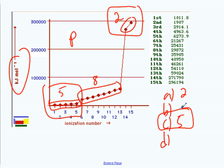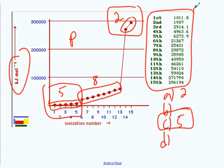Does this seem pretty straightforward? Either graphically or using a table of numbers, you should be able to identify the element, tell me how many valence electrons it has, and tell me what family it's in on the periodic table. That's the last topic in the unit. Thank you.